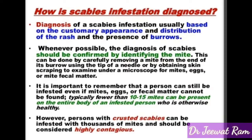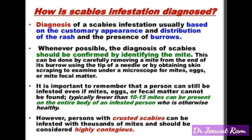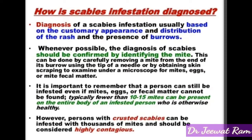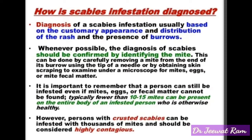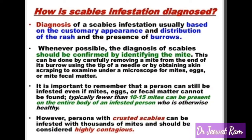It is important to remember that a person can still be infested even if mites, eggs, or fecal matter cannot be found. Typically, fewer than 10 to 15 mites can be present on the entire body of an infested person who is otherwise healthy. However, persons with crusted scabies can be infested with thousands of mites and should be considered highly contagious.